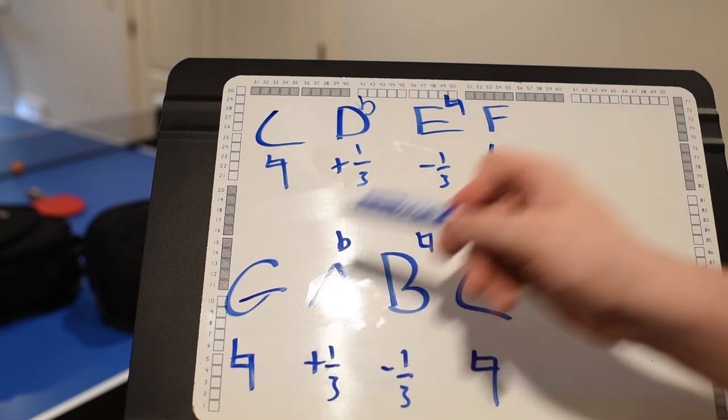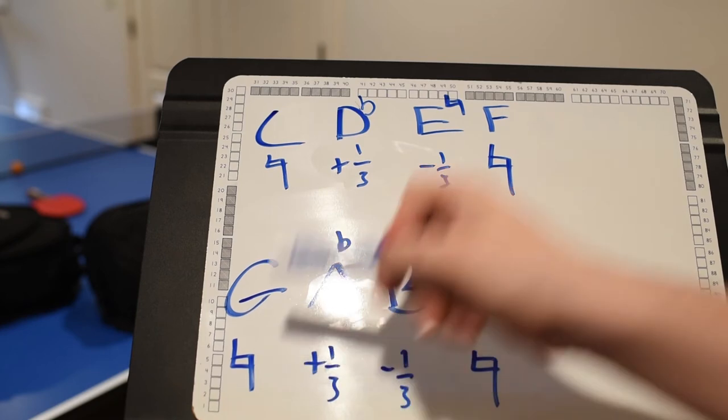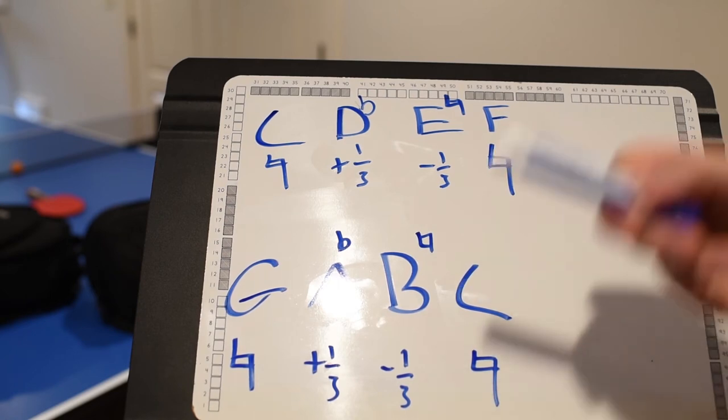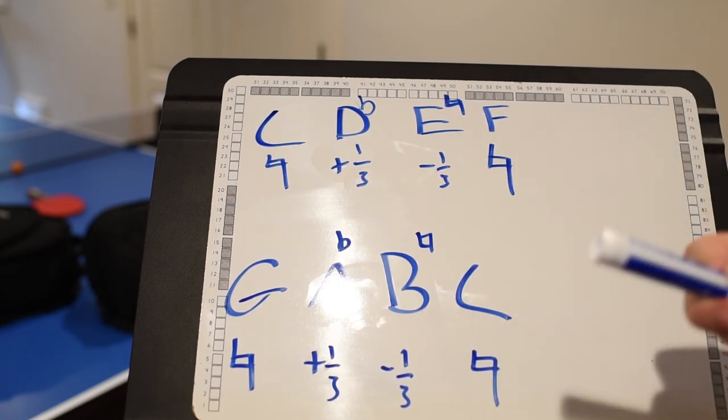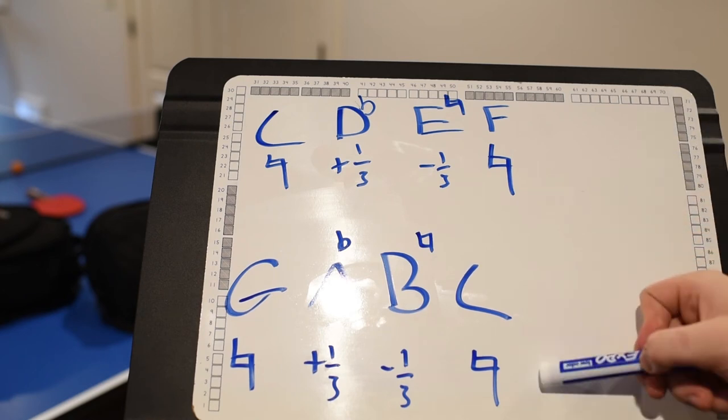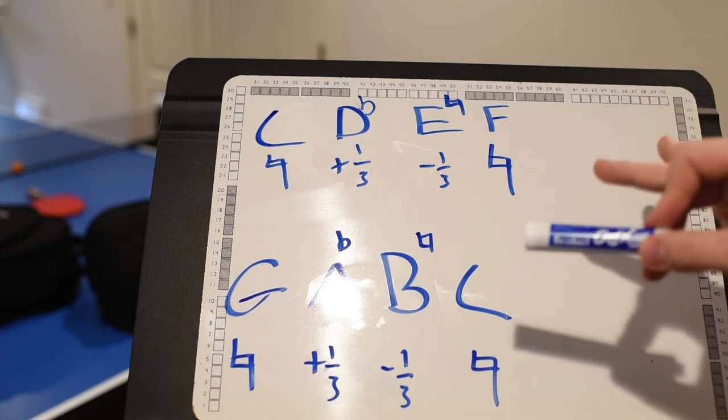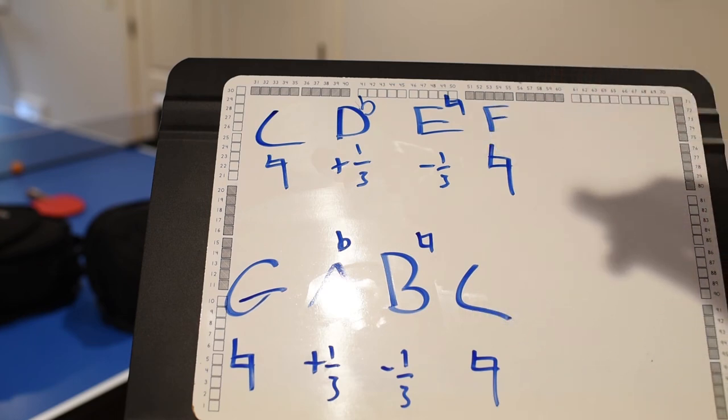Then I have G. F to G is a whole step. G, A flat plus a third, B natural minus a third, and C natural. So G, A flat, B, C. So C, D flat, E, F, G, A flat, B, C. So now that we know how it sounds, we're going to put it into a software to get the most precise pitches possible.